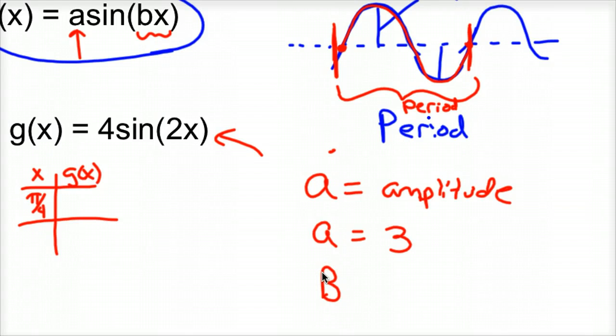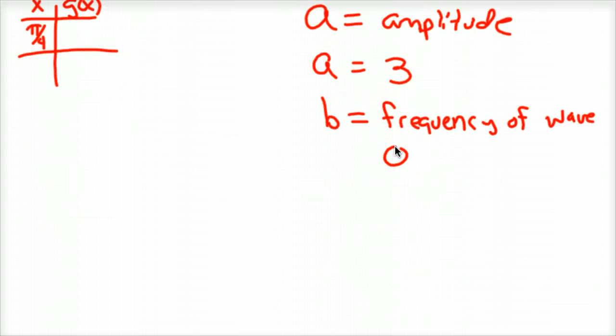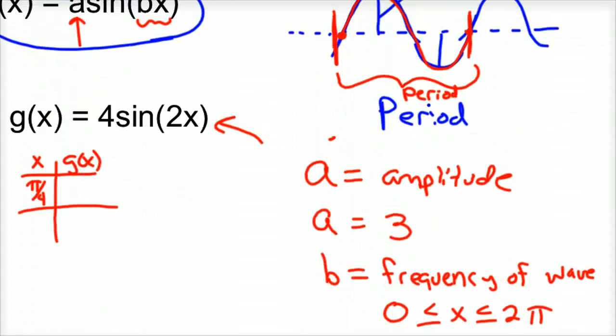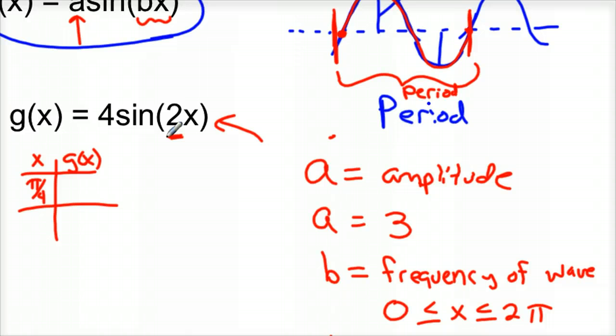Now, B... and I had to use the lowercase b, so sorry. B tells me your frequency of the wave from 0 to 2 pi. So notice our b, in our case, is 2. And now let me show you that. There it is, there's b, the number in front of x.